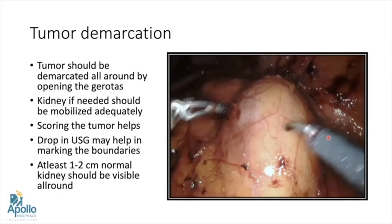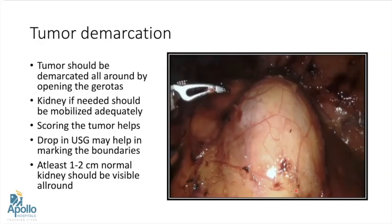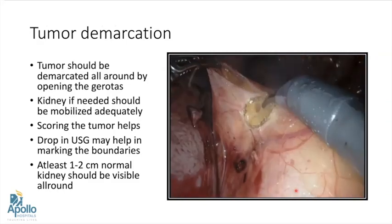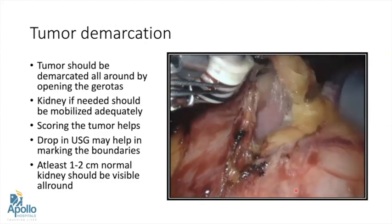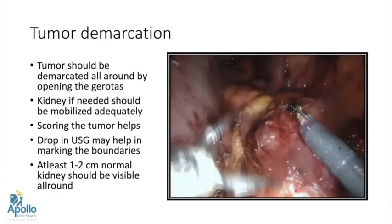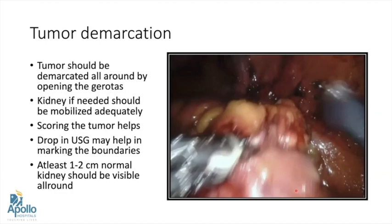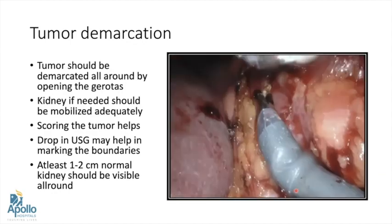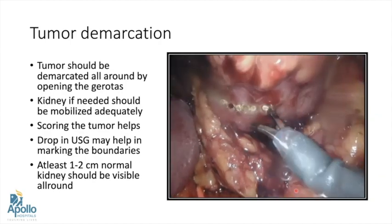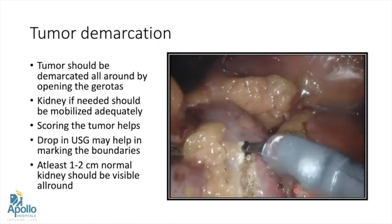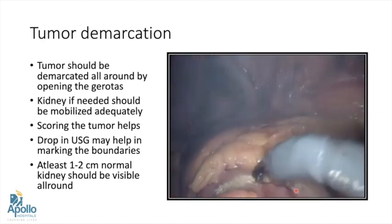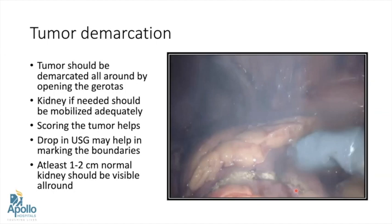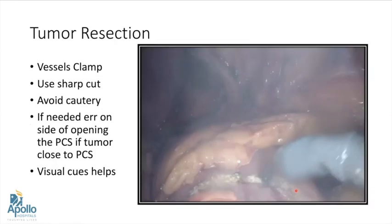The next step in partial nephrectomy is tumor demarcation. Once the vessels are dissected, we should remove the fat overlying the tumor and the Gerota fascia should be opened all around the tumor for at least one to two centimeters, so that we can see the normal parenchyma all around. Drop-in ultrasound is very useful especially when dealing with endophytic tumors. Scoring or marking the tumor serves two purposes: it confirms complete circumferential dissection and provides a margin from which to begin resection.